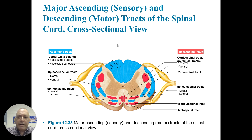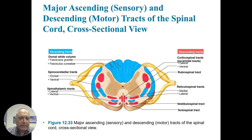There are various tracts that contain sensory information — these are ascending tracts. The sensory information from the body will be received in a number of nuclei through white matter tracts like the dorsal white column, the spinocerebellar tracts, and the spinothalamic tracts. The motor pathways that descend include the corticospinal tracts, which are pyramidal tracts, the rubrospinal tracts, the reticulospinal tracts, vestibulospinal tracts, and the tectospinal tracts. Ascending pathways are sensory and descending pathways are motor.